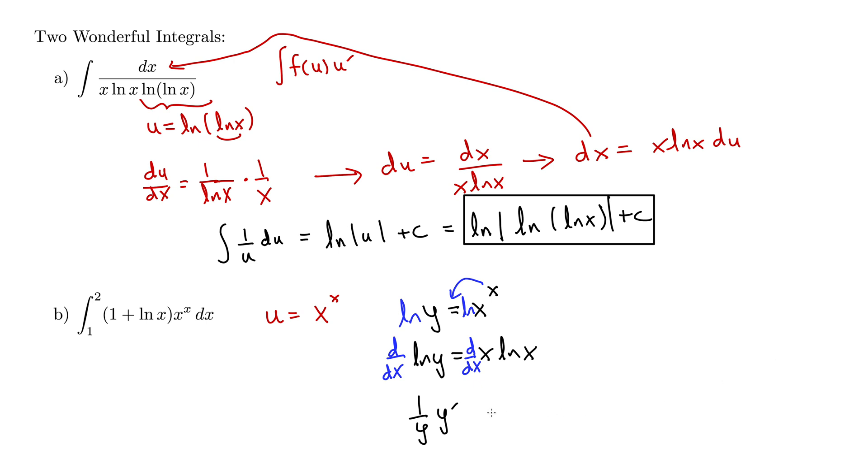On the right hand side, we now have the product rule. So we'll do that, a prime b plus b prime a is the product rule. So a prime b is 1 natural log x plus b prime a. Well, the derivative of natural log x is 1 over x times a, which is x. So this boils down to natural log x plus 1. Then to get the full derivative, we have y prime is then, we multiply it by y, but y is actually x to the x. So we have x to the x times natural log x plus 1.